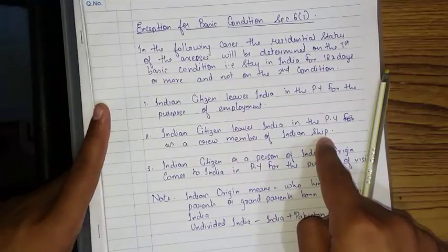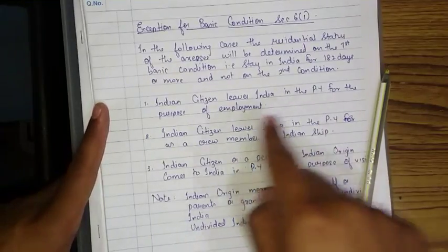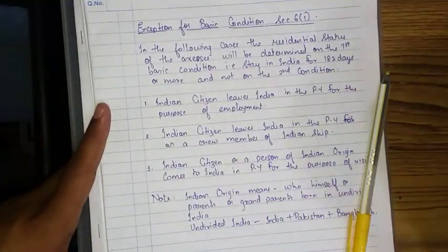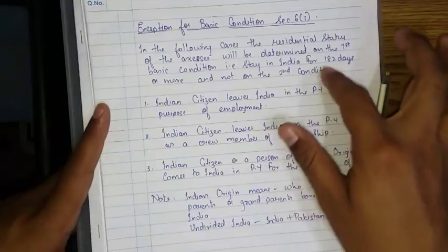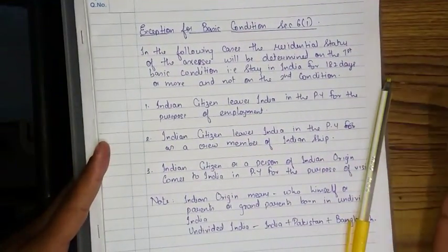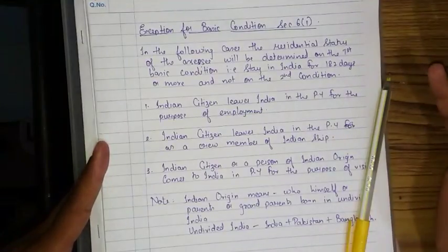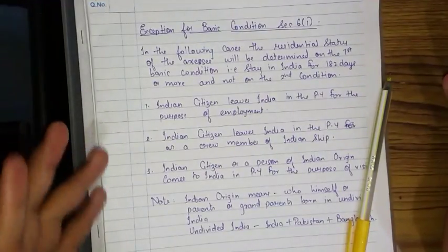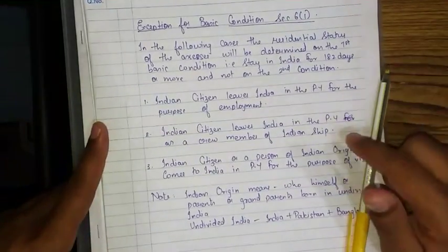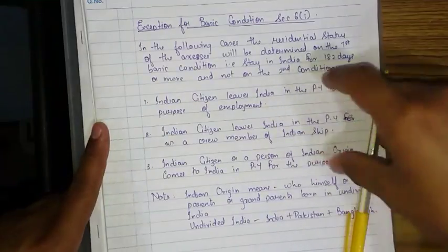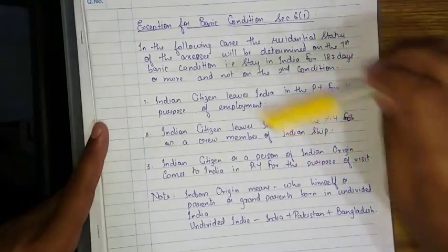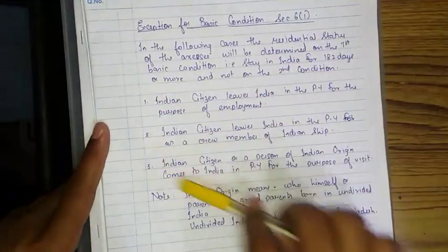If an Indian citizen leaves India in the previous year as a crew member of an Indian ship, and this person stayed in India from 1st April 2015 to a date beyond 4th October — that is, 182 days or more — then he will be considered a resident. In these three cases only, there is no need for calculating the second basic condition; the second basic condition won't be applied to these three types of people.